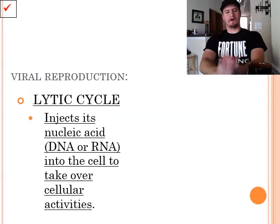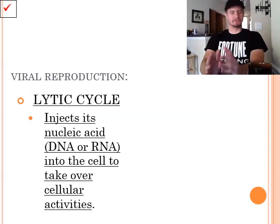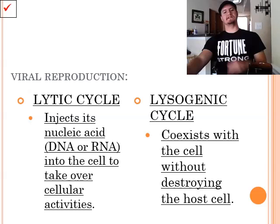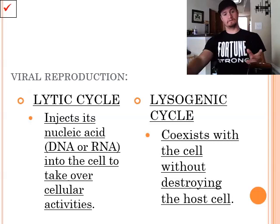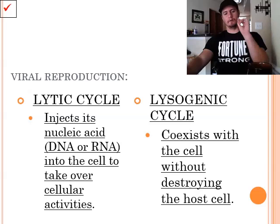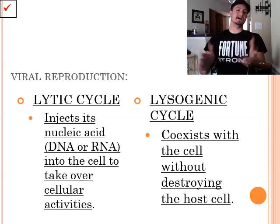So viral reproduction. We have a wide variety of different cycles, but they can be broken down into two basic ones. We have the lytic cycle. During the lytic cycle, the virus injects its nucleic acid, DNA or RNA, into the cell and takes over all activities. And we also have the lysogenic cycle. The lysogenic cycle coexists with the cell without destroying the host immediately. It still takes care of the host cell, but it takes its time doing it. It's very sneaky about it. On the next couple of slides, we're going to show you a diagram of each cycle and how they work.